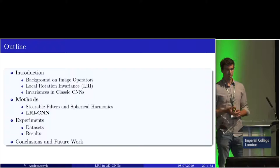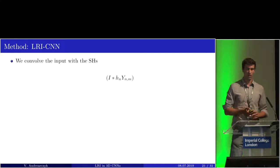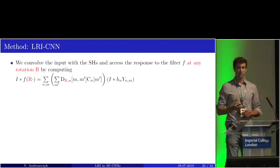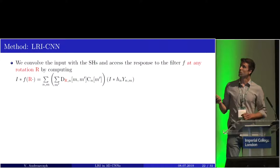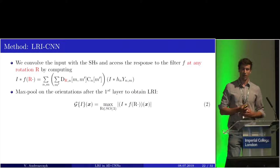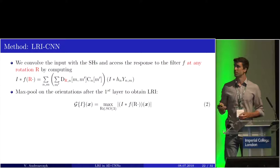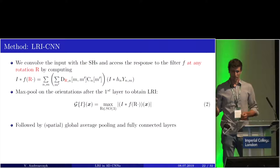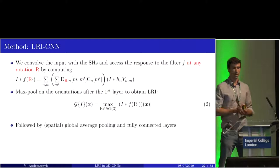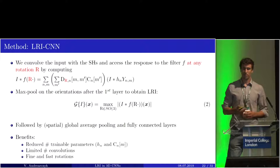With this basis, I present the locally rotation invariant CNN. First, we convolve the input with the spherical harmonics HN, YNN. From this, we can access the response to filter F at any orientation R. We simply do a recombination of the responses using a steering matrix D_LN — this is fast and efficient. We then do max pooling on the orientations to obtain local rotation invariants. This is followed by global average pooling and fully connected layers, trained as a normal CNN.